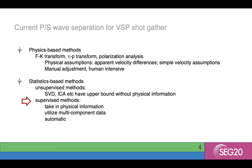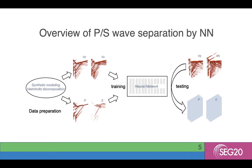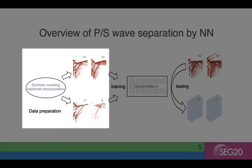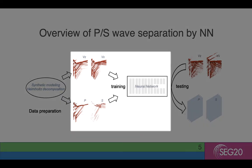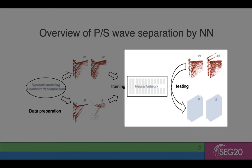Here we show our machine learning-based method for PS wave separation on VSP shot-gathers. The overall workflow contains three parts: data preparation, training, and testing. In data preparation, we use synthetic modeling and Helmholtz decomposition to get the training datasets. This theory reveals the most complete relationship between PS waves and the mixed wavefield. To simulate multi-component separation, we make four shot-gathers — the two-component VSP receivers VZ and VX, and the separated P and S potentials — and put them into our network to train. After training, when we input these two-component VSP shot-gathers, the network gives us the separated P and S potentials.